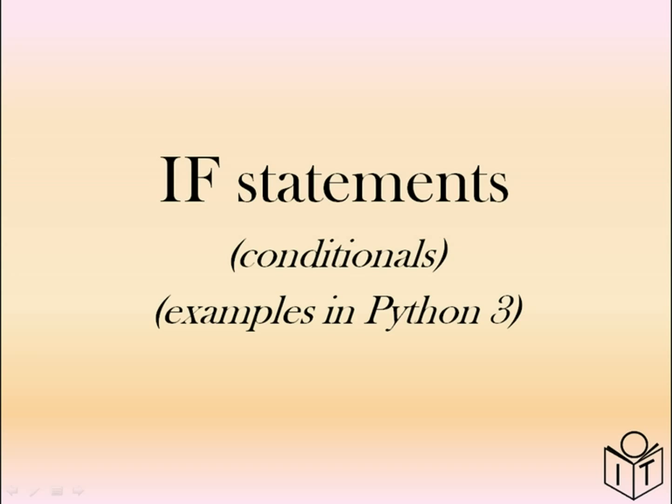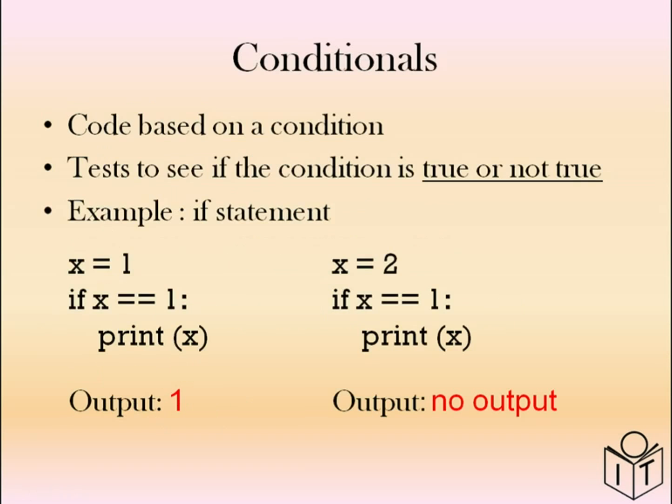We're going to cover the different if statements and booleans. You might have heard of conditionals — it's code that's based on a condition. The condition is going to be either true or false, which is a boolean. The example would be an if statement. You check the condition to see if it's true; if it's true, you action the code. In this example, you would print x.